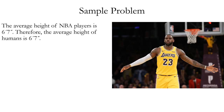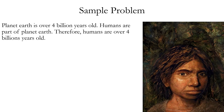Sixth: the average height of NBA players is 6 feet 7 inches; therefore, the average height of humans is 6 feet 7 inches. This is a biased sample fallacy because NBA players tend to be much taller on average, as height gives an advantage in basketball. Seventh: Planet Earth is over 4 billion years old; humans are part of planet Earth; therefore, humans are over 4 billion years old. This is a fallacy of division — reasoning from a property of the whole, Planet Earth, to a property of the part, humans. Next up: Part 4, fallacies of unwarranted assumption and diversion.